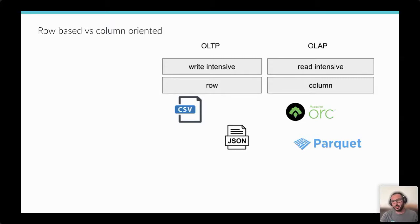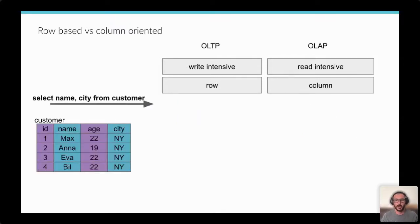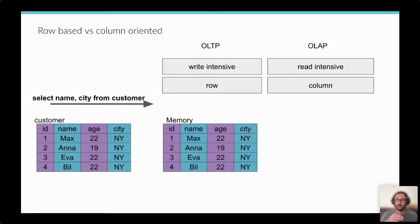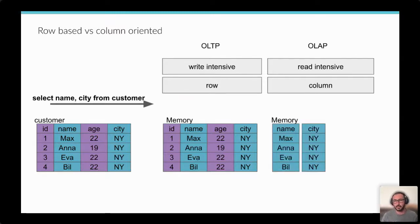Why is it so crucial to have column-oriented data for analytical purposes? If you have a CSV file and run a SQL statement selecting only name and city, in the classical row-based way you scan the whole file. With Parquet, you scan only those two columns - saving time, resources, and money because you don't need to provision the same amount of servers.